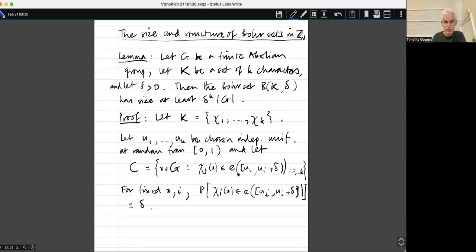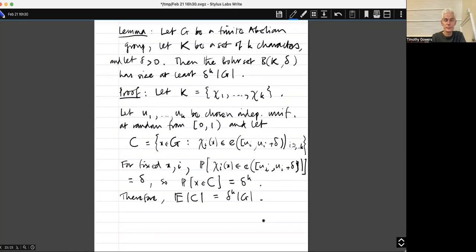That means that the probability that X belongs to C is equal exactly to delta to the K. Therefore, the expected size of C is exactly delta to the K times the size of G.